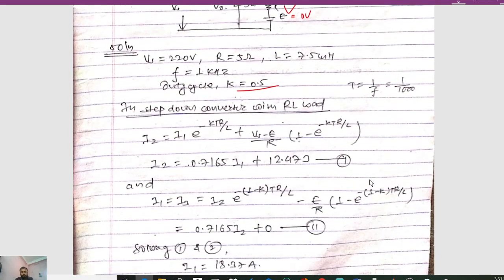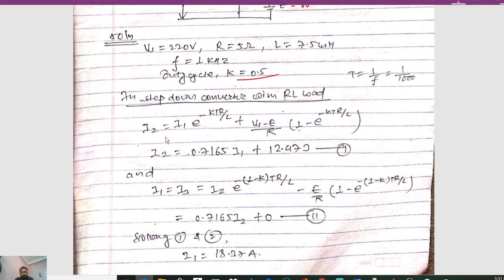Now in the step-down converter with R-E-L load, the value of I2 is calculated as: I2 = I1 × e^(−KT·R/L) + (Vs − E)/R × (1 − e^(−KT·R/L)). If we substitute the values of K, T, R, and L, we get 0.716551 here, plus (Vs − E)/R.